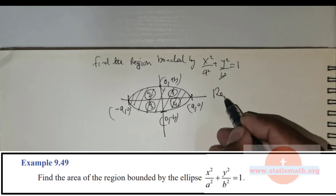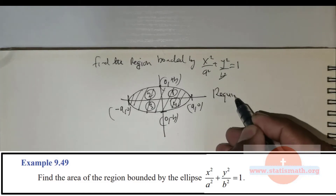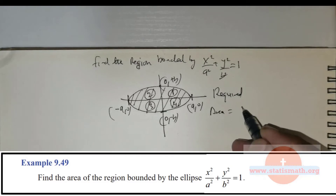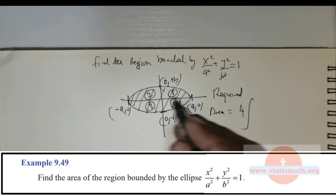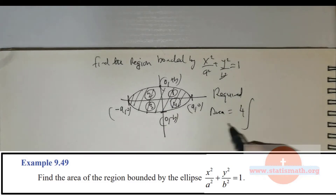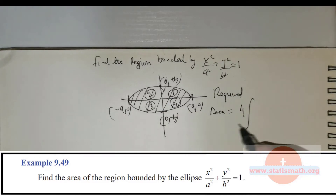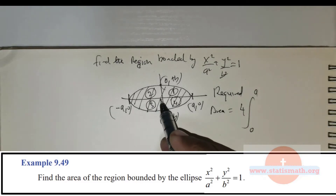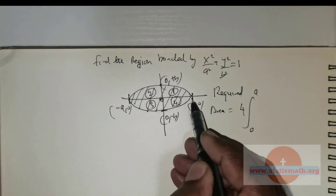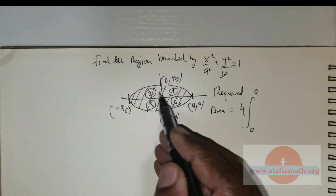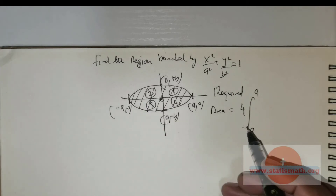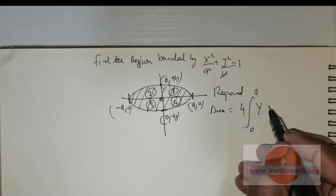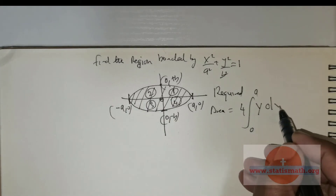So the required area for this would be 4 times — there are four regions out there. The limits are 0 to a, because I would be taking from 0 to a and multiplying it by 4 times y times dx.